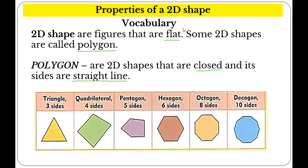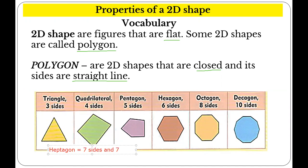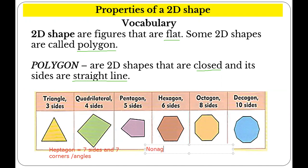Now, that is missing here. We have 7 sides — we call it heptagon. Heptagon has 7 sides and 7 corners, or angles. Another one is nonagon. What do you think nonagon is? Nonagon has 9 sides and 9 corners or angles.